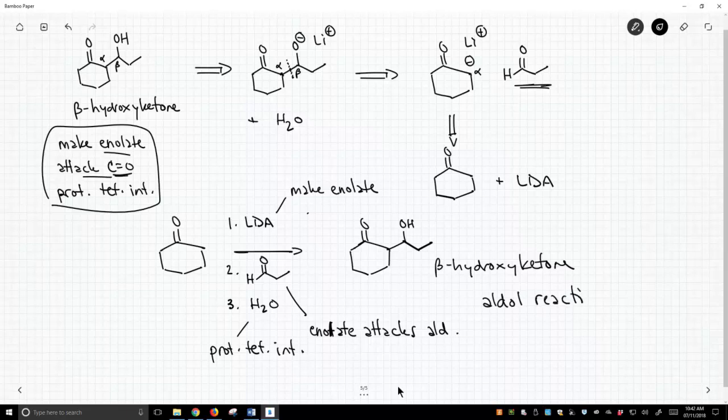So this is how you take apart an aldol reaction. I'd say the key step, probably the hardest step, is to be able to look at this molecule and say, oh yeah, that's a beta hydroxy ketone. And once you're able to recognize that as a beta hydroxy ketone, where did we talk about beta hydroxy ketones? This came from an aldol reaction. That initial recognition, I think, is the hardest part. After that, you just work the steps that you've already learned backwards. So that's an aldol reaction analyzed retrosynthetically from the product to the starting materials.